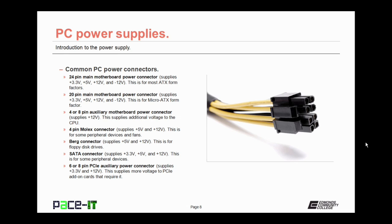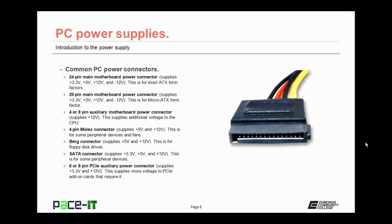The 4 or 8 pin auxiliary connector supplies additional 12 volt current for the CPU. You may also find the 4-pin Molex connector, which supplies 5 volt and 12 volt current and is used for some peripheral devices and many fans. There is also the Berg connector, which supplies 5 volt and 12 volt and was commonly used on floppy disk drives — you probably won't find many Berg connectors on modern power supplies. Then there is the SATA connector, which supplies 3.3, 5, and 12 volts to SATA devices using a 15-pin plug. Finally, there is a 6 or 8 pin PCI auxiliary power connector that supplies additional 3.3 and 12 volts to PCI add-on cards, specifically video graphics cards.